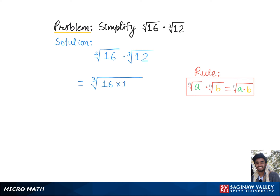Now we'll factor out 16 and 12 in a way which gives us the maximum number of cube roots. Here, cube root of 16 can be written as 4 times 4, and 12 can be written as 4 times 3.